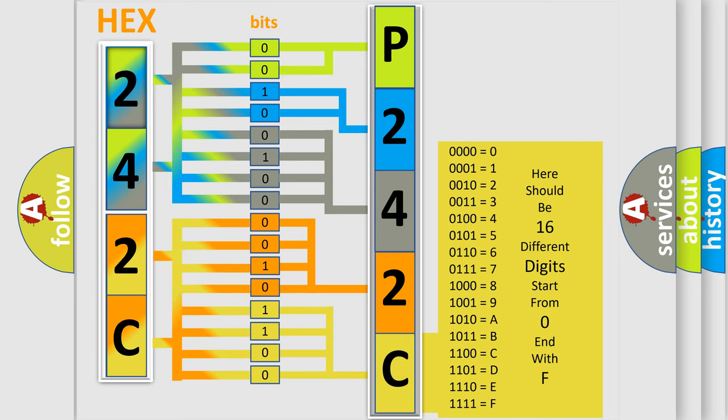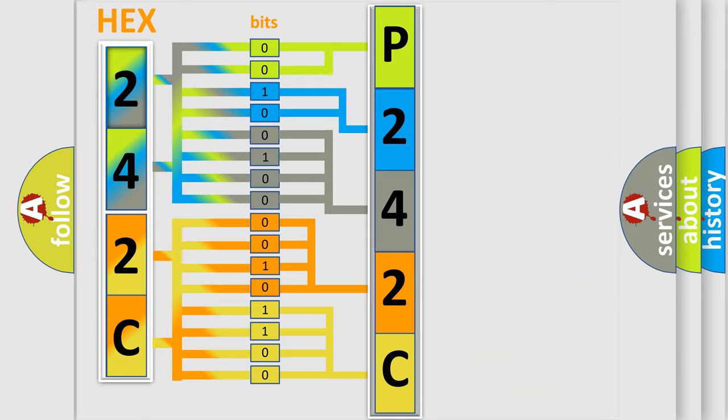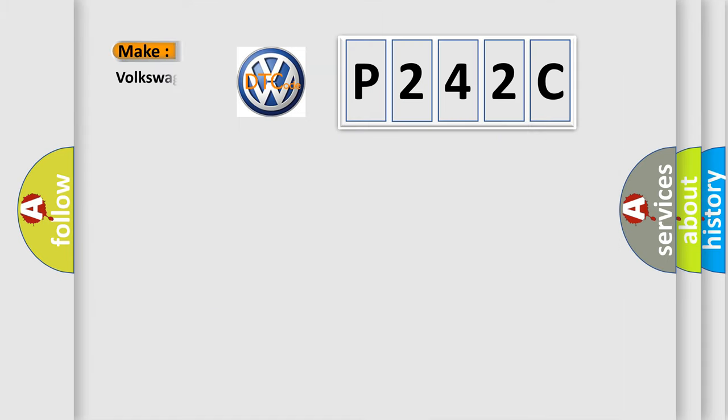We now know in what way the diagnostic tool translates the received information into a more comprehensible format. The number itself does not make sense to us if we cannot assign information about what it actually expresses. So, what does the diagnostic trouble code P242C interpret specifically?